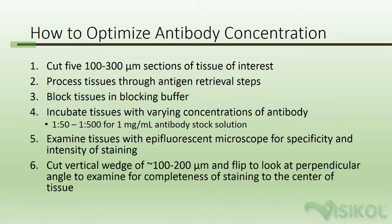How to optimize antibody concentration: Cut five 100 to 500 micron sections of the tissue of interest. Process tissues through antigen retrieval steps. Block tissues in blocking buffer. Incubate tissues with varying concentrations of antibody — 1:50 to 1:500 for a 1 mg/ml antibody stock solution. Examine tissues with an epifluorescent microscope for specificity and intensity of staining, then examine using a confocal microscope on the XZ plane to determine intensity according to depth.